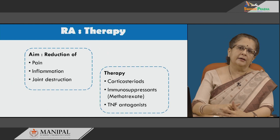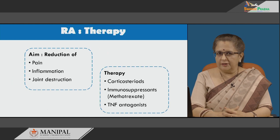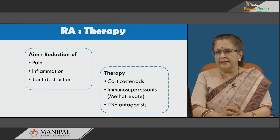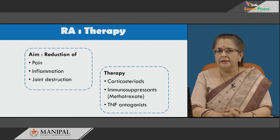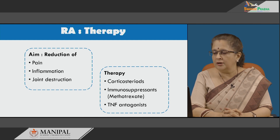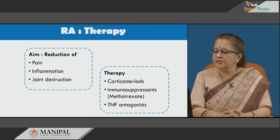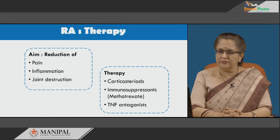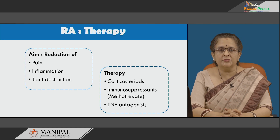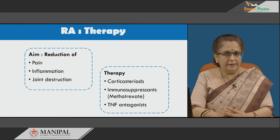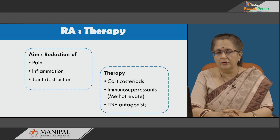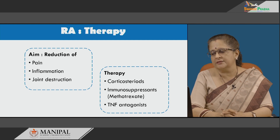Therapeutically, rheumatoid arthritis management aims at reduction of pain, inflammation and joint destruction. Initially corticosteroids are used, followed by immunosuppressants, more specifically methotrexate. Clinical trials are currently ongoing for TNF antagonist usage in rheumatoid arthritis.